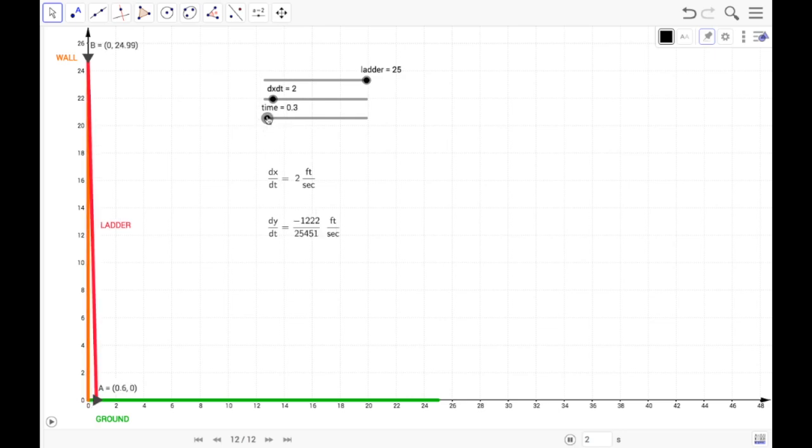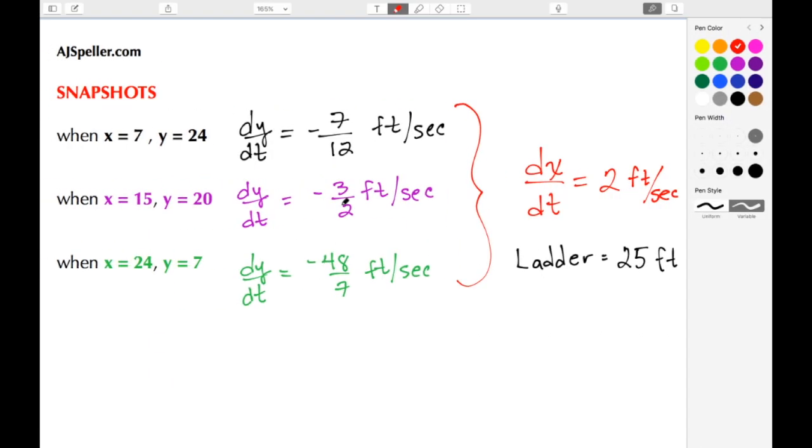This x value here in this point signifies the distance from the wall. So right now we're 2.8 feet from the wall. Let's continue on until it's at 7 feet. And here we are at 7 feet, and we see that dy/dt is negative 7/12 feet per second. If we look back, we also have the negative 7/12 feet per second.